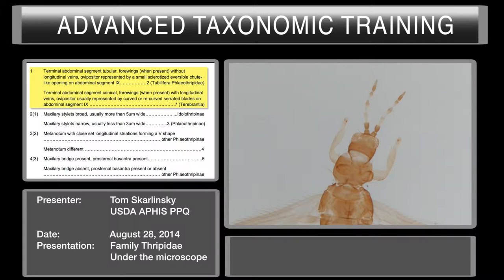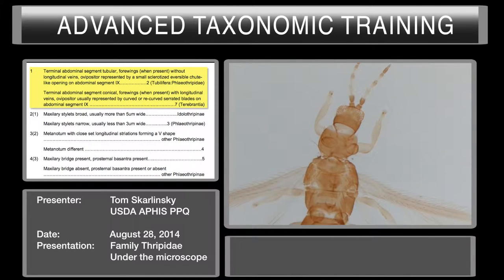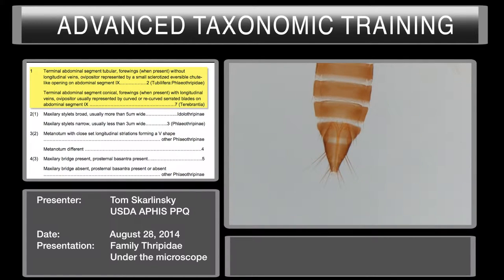We've managed to get it mounted on a slide and now we have to decide what suborder it is — is it Tubulifera or is it Terebrantia? The best place to look is on the end. What are we going to look for? Is the posterior or terminal abdominal segment conical, or is it tubular?